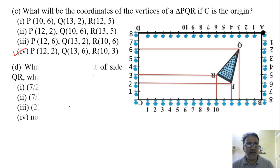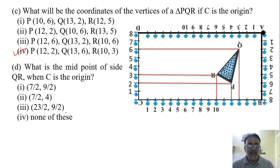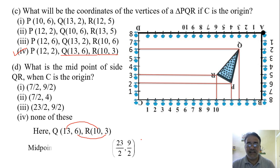Now let us move toward the fourth question. What is the midpoint of QR when C is the origin? So QR, already we got the coordinates that is 13, 6 and 10, 3 and we know the midpoint formula is x1 plus x2 by 2 and y1 plus y2 by 2. So 13 plus 10 by 2 and 6 plus 3 by 2. So we got 13 plus 10 that is 23 by 2, 6 plus 3 that is 9 by 2. So 23 by 2 and 9 by 2 is the correct answer.